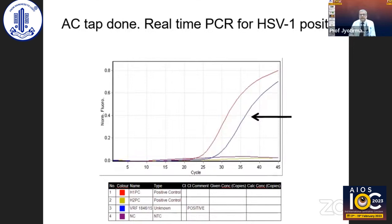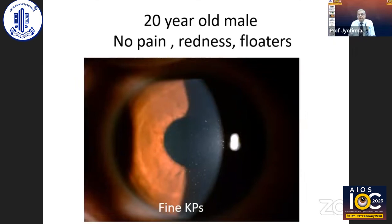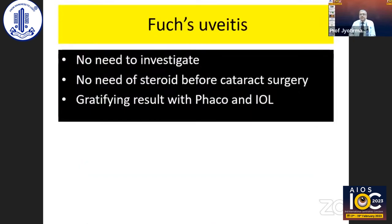This is a 20-year-old male with no pain, redness, and floaters. There are fine keratic precipitates present. In this case, you do not need to investigate because it is idiopathic uveitis — a kind of autoimmune uveitis. You won't find anything by investigation. No need for steroids before cataract surgery. Gratifying results with phacoemulsification and IOL implantation.